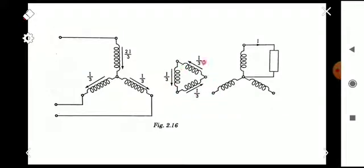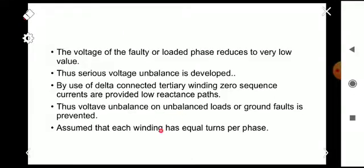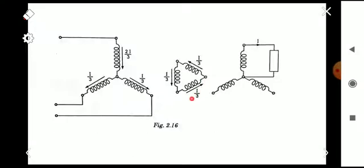The mesh-connected tertiary provides a path for third harmonic currents and zero sequence currents required for magnetizing at high saturation flux densities.